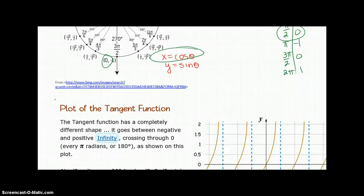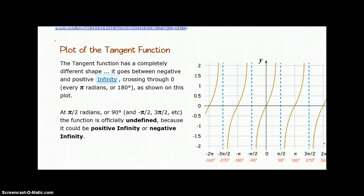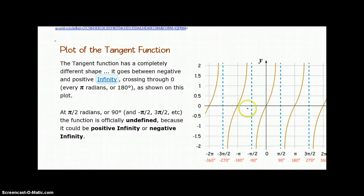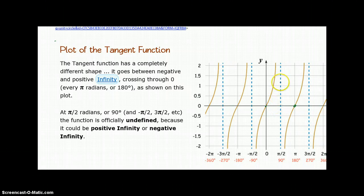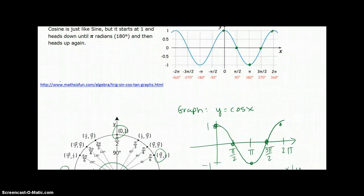Finally, let's look at tangent. Tangent has a completely different shape. It goes between negative infinity to positive infinity, crossing through zero every pi radians. Every pi at zero. And then it goes up to infinity, down to negative infinity. At pi over two, or 90 degrees, the function is officially undefined. That's where these dotted lines are. These are called asymptotes. That's why it cannot have a beautiful graph like the ones above.